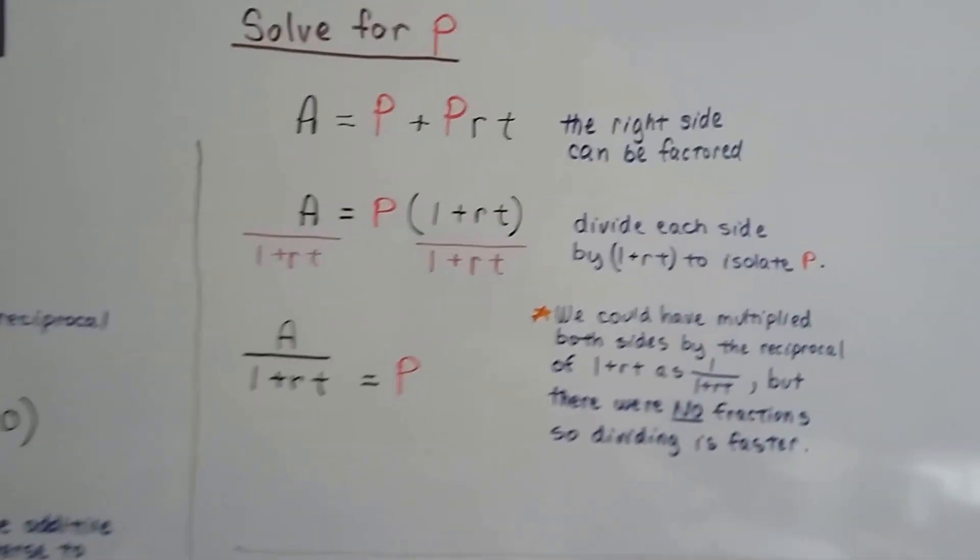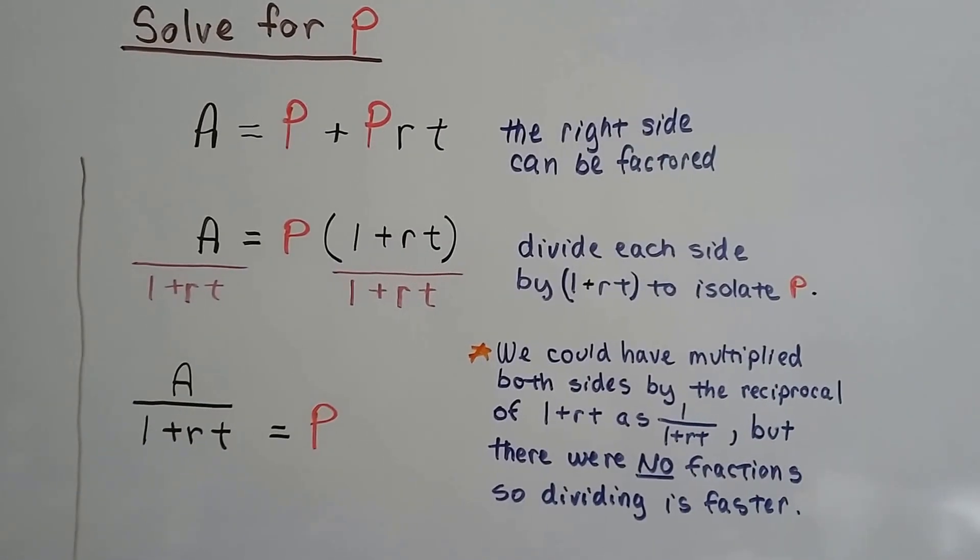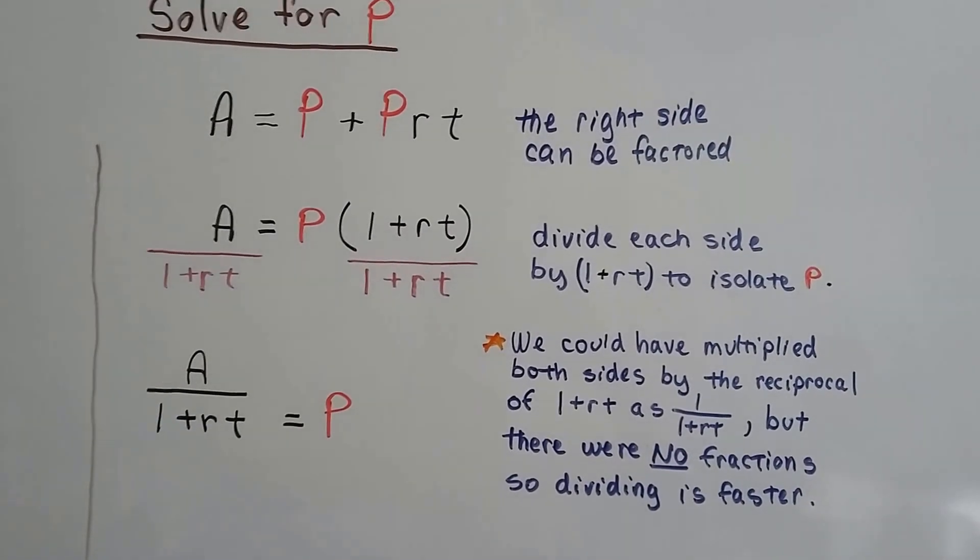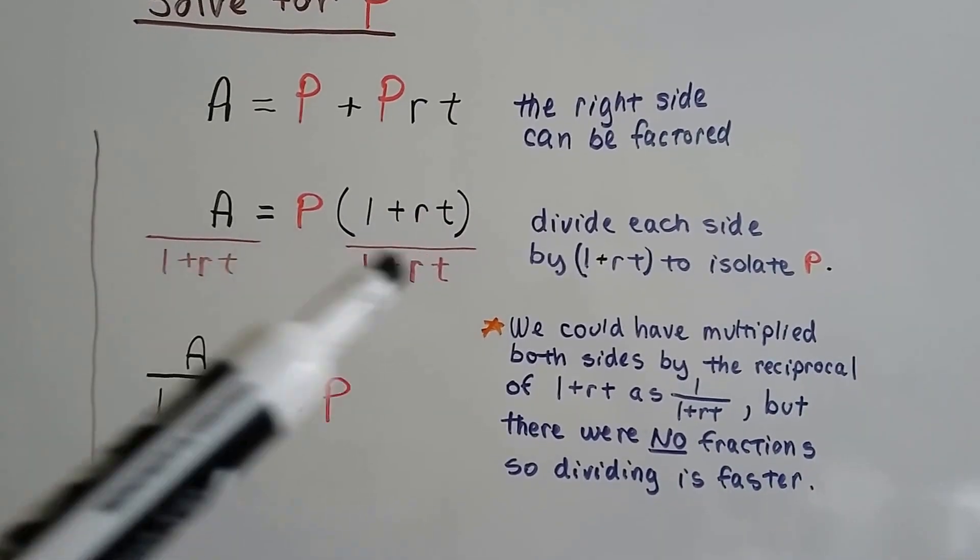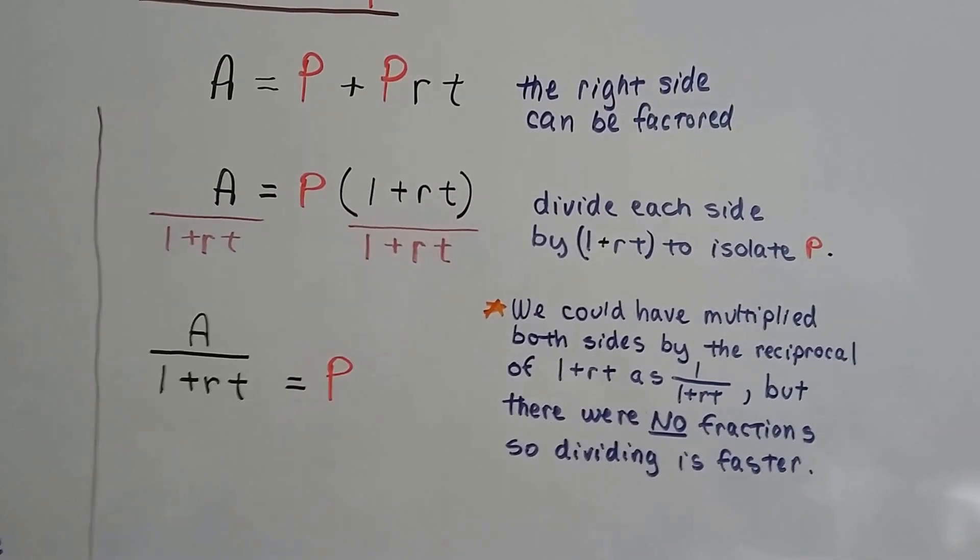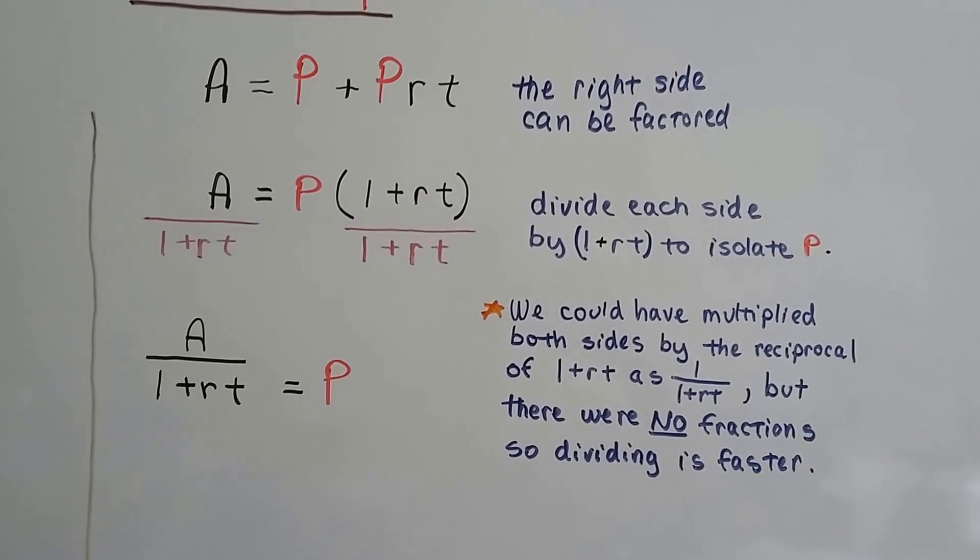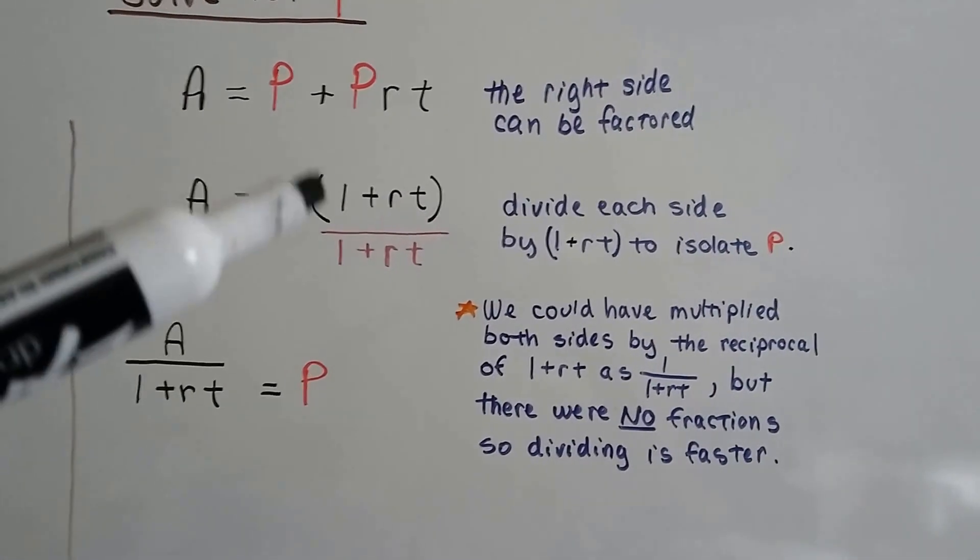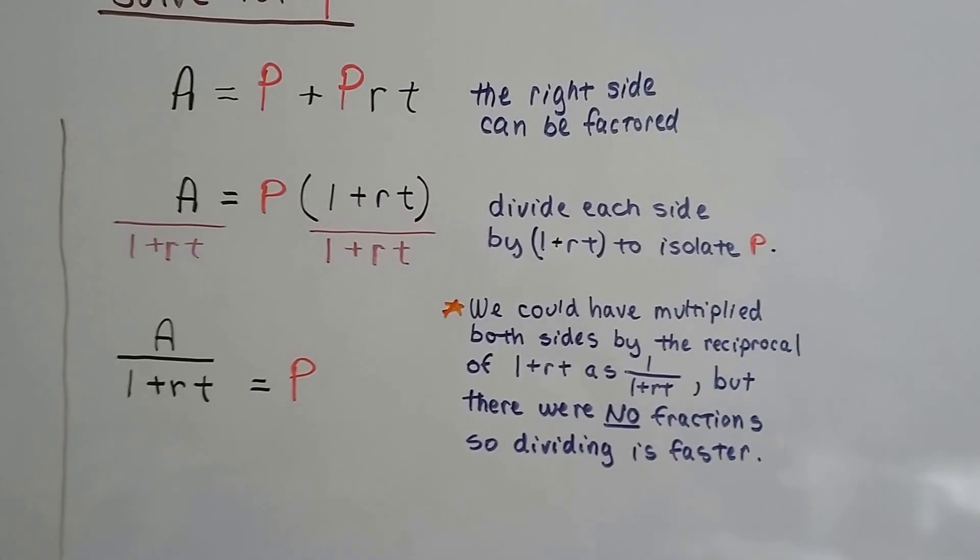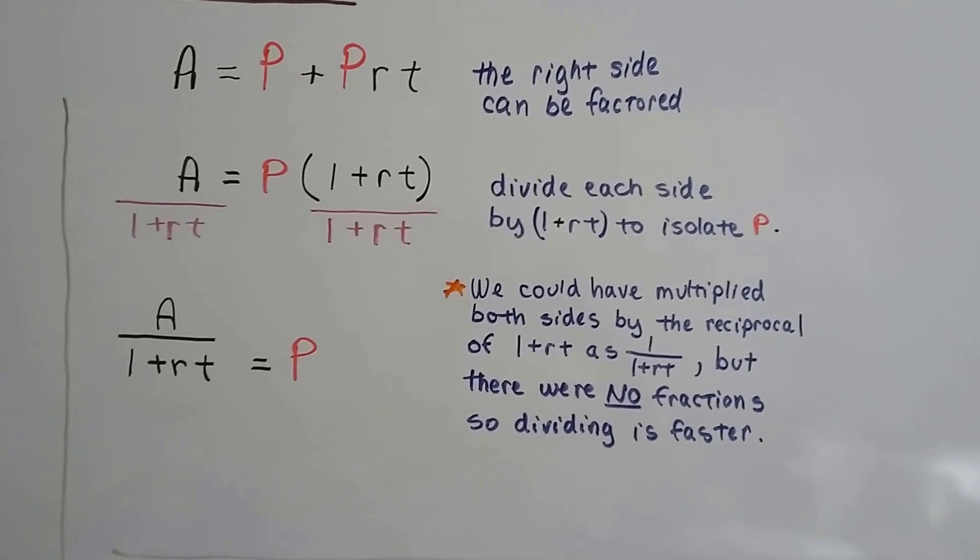If it says to solve for P, and we've got A equals P plus PRT, well, the right side can be factored. We can do P times 1 plus RT. We can divide each side by 1 plus RT to isolate this P. This becomes a 1. And now we've got A over 1 plus RT on this side equals P. We could have multiplied both sides by the reciprocal of 1 plus RT as 1 over 1 plus RT. But there are no fractions, so just dividing it by 1 plus RT was quicker. It got us right to our answer.